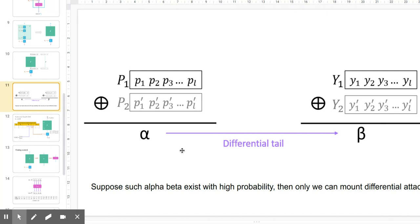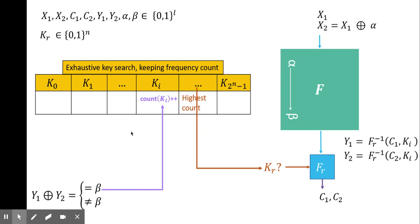We suppose that such alpha beta exists with high probability; only then we can mount a differential attack. In order to mount a differential attack on a block cipher, it is necessary to have a differential tail alpha goes to beta with high probability.